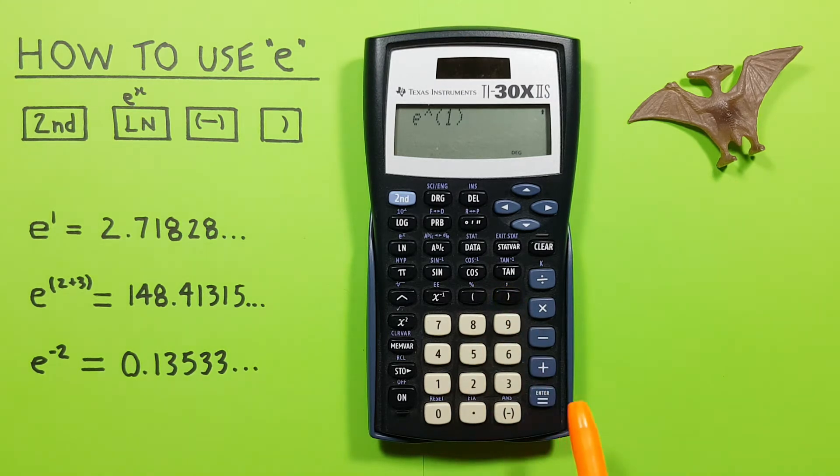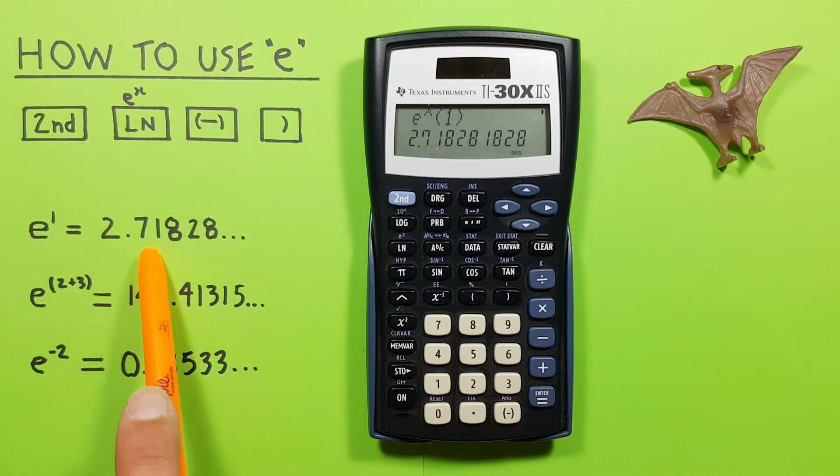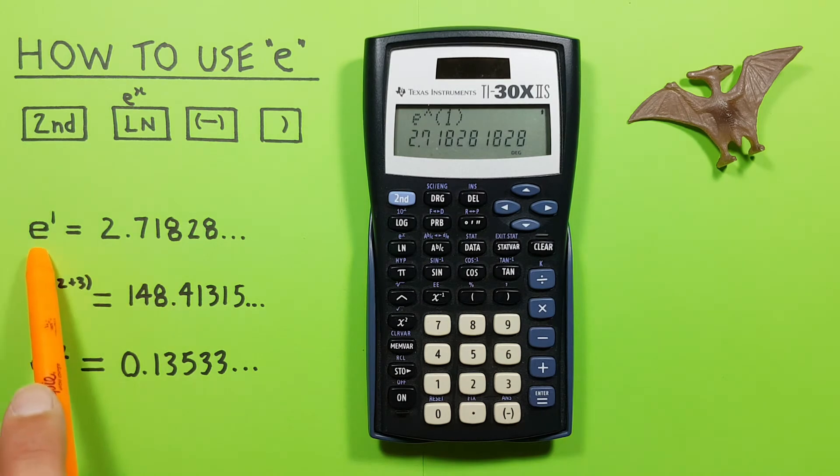We can now press equals, and see we get a result of 2.71828, etc., which is the value of E.